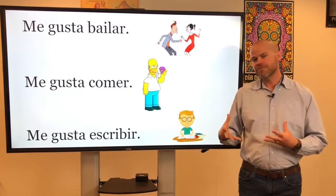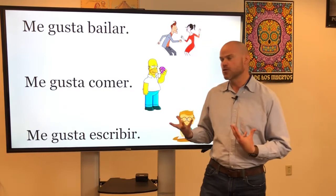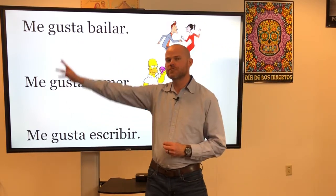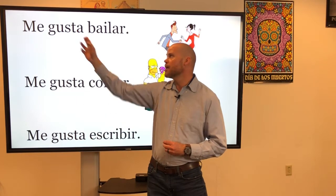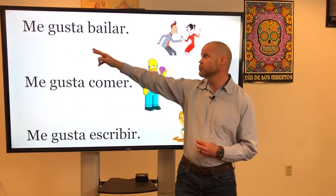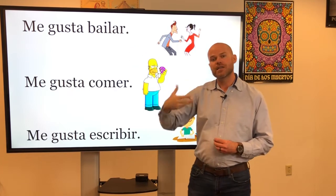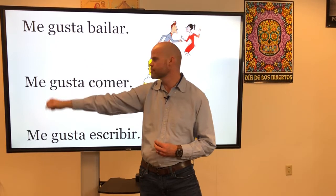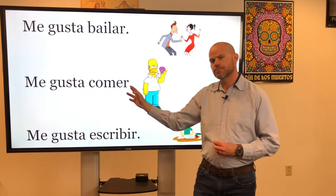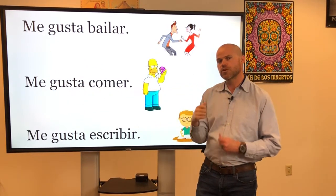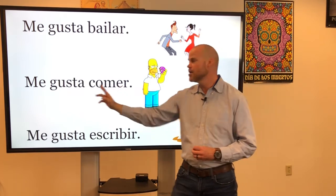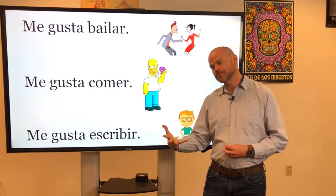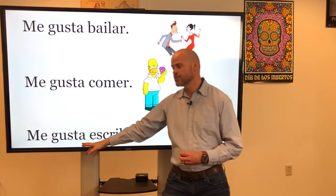So what if it's a verb that we like, or that pleases us? If it's a verb, we always use the singular form of gustar and leave the verb in the infinitive. For example, me gusta bailar would be I like to dance — or literally, to dance pleases me. Me gusta comer would be I like to eat — to eat pleases me. Me gusta escribir — I like to write, or to write pleases me. Muy bien.